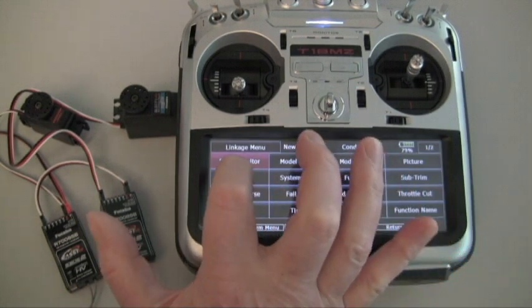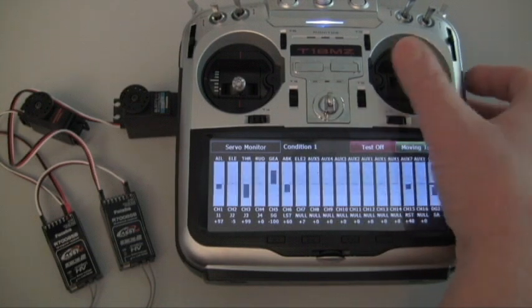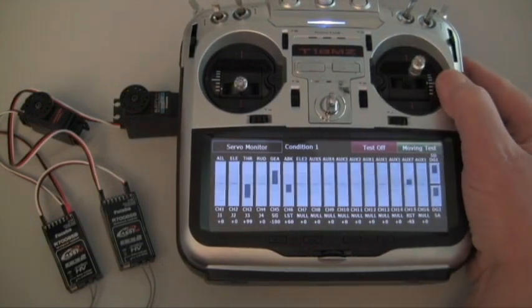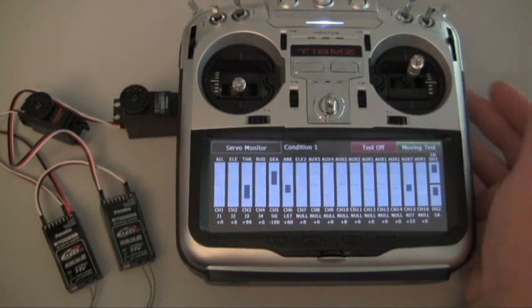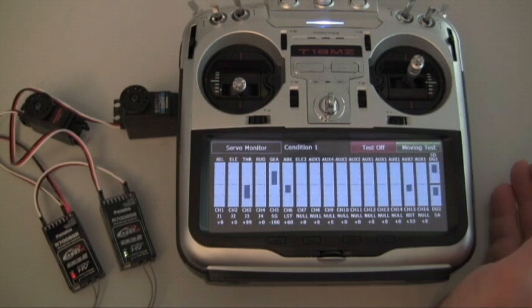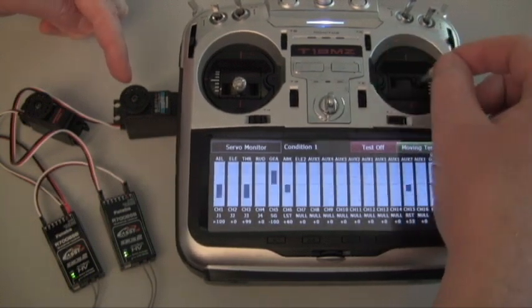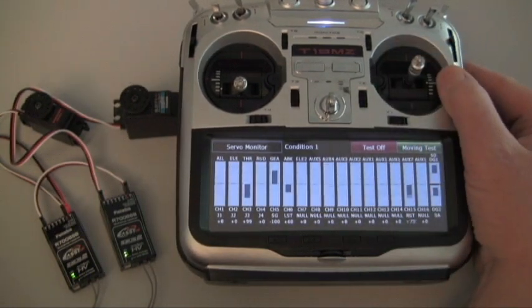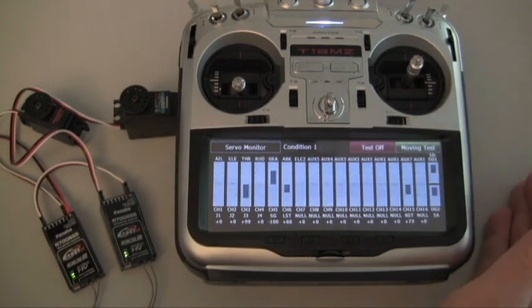Let's look at the servo monitor menu. Receivers are off now so we're going to be looking at channel 1 ailerons and then channel 15 over here I've got assigned to the right hand slider. Let's power up. Both receivers are linked up. Channel 1 ailerons responding, the servo is responding to it. Channel 15 on the slider over here and you can see that's responding there. So that's all there is to linking two receivers up to your 18MZ.